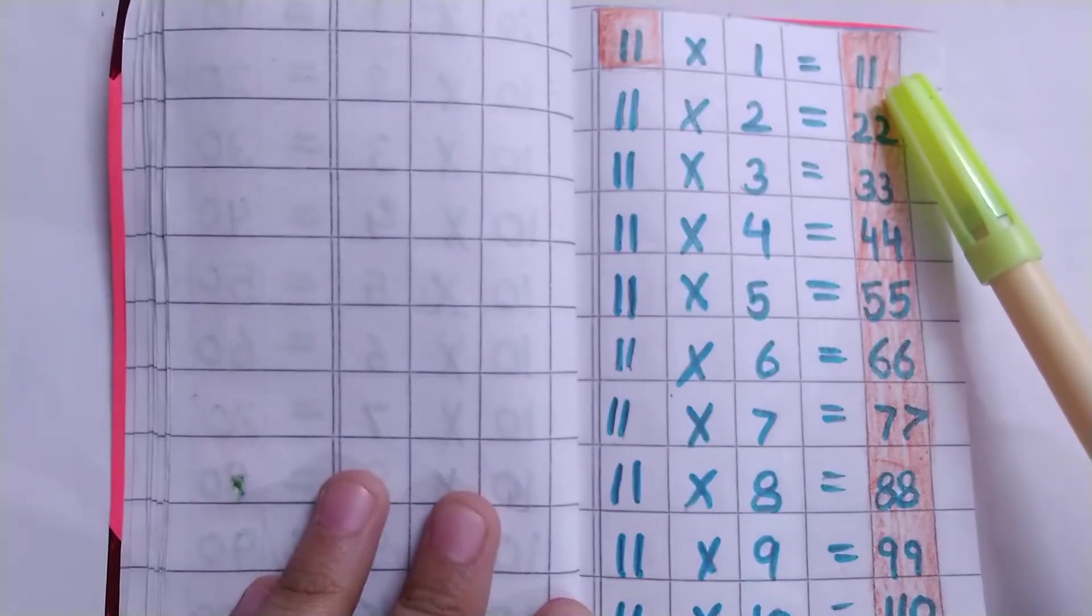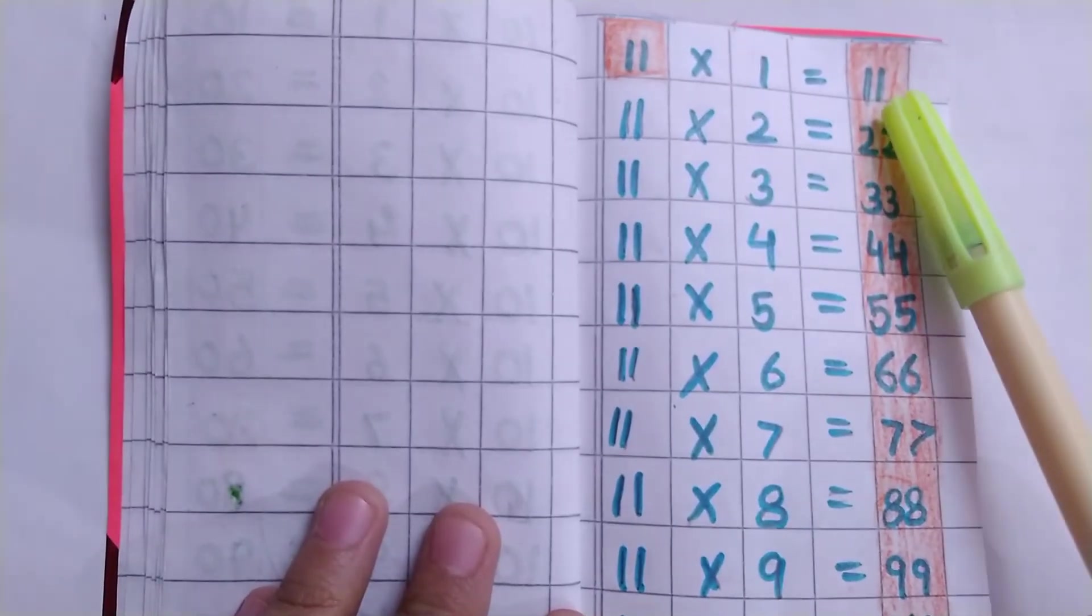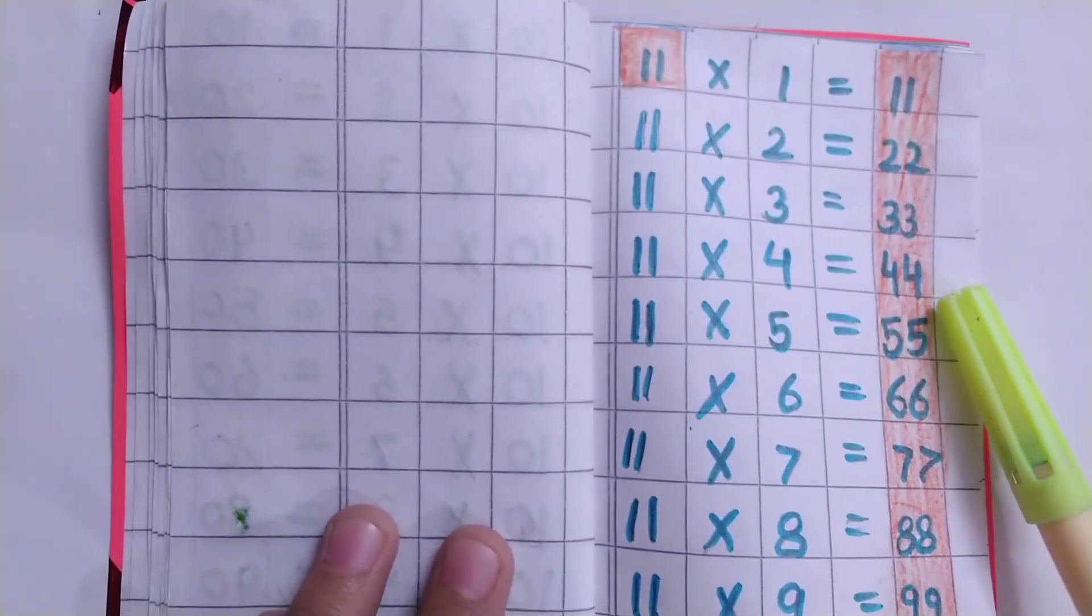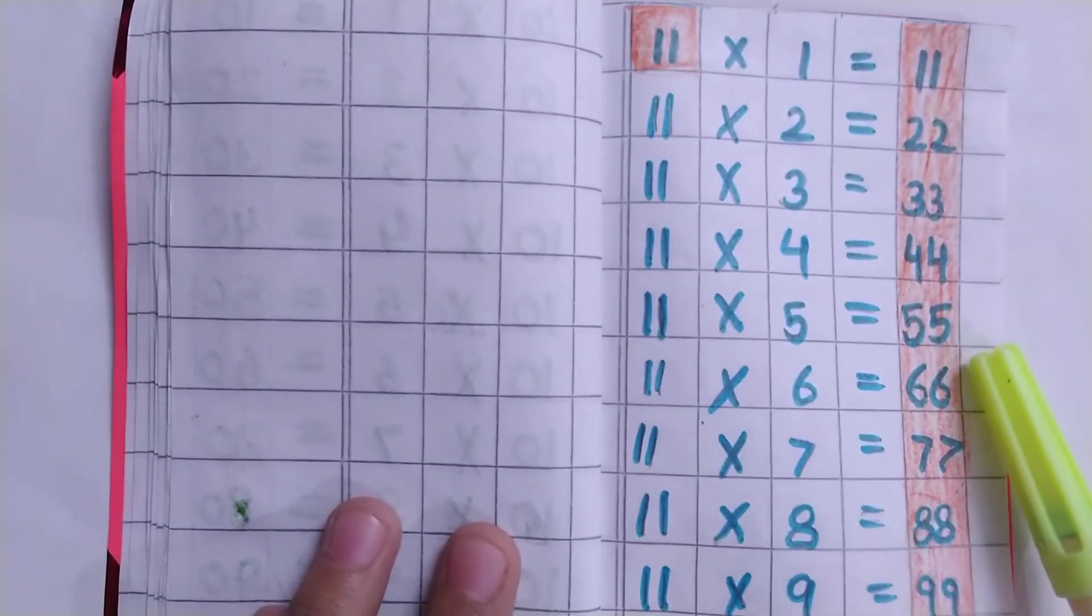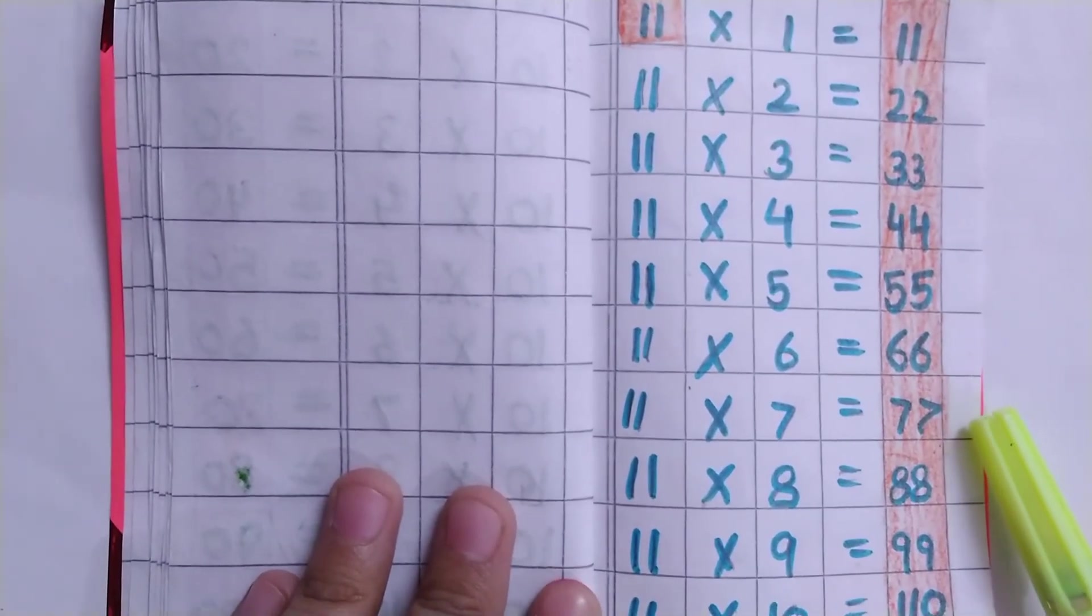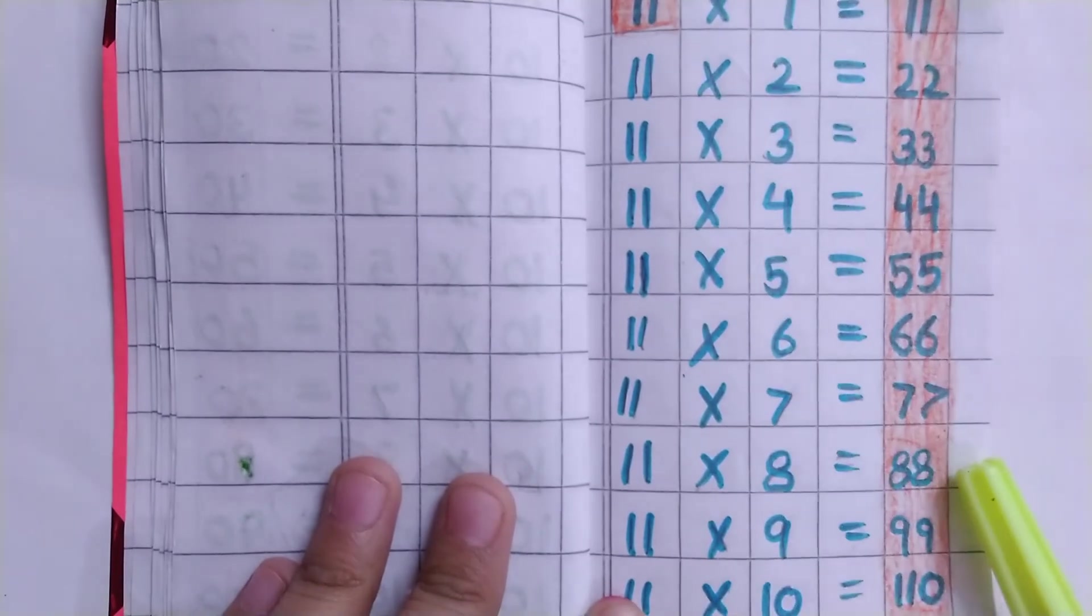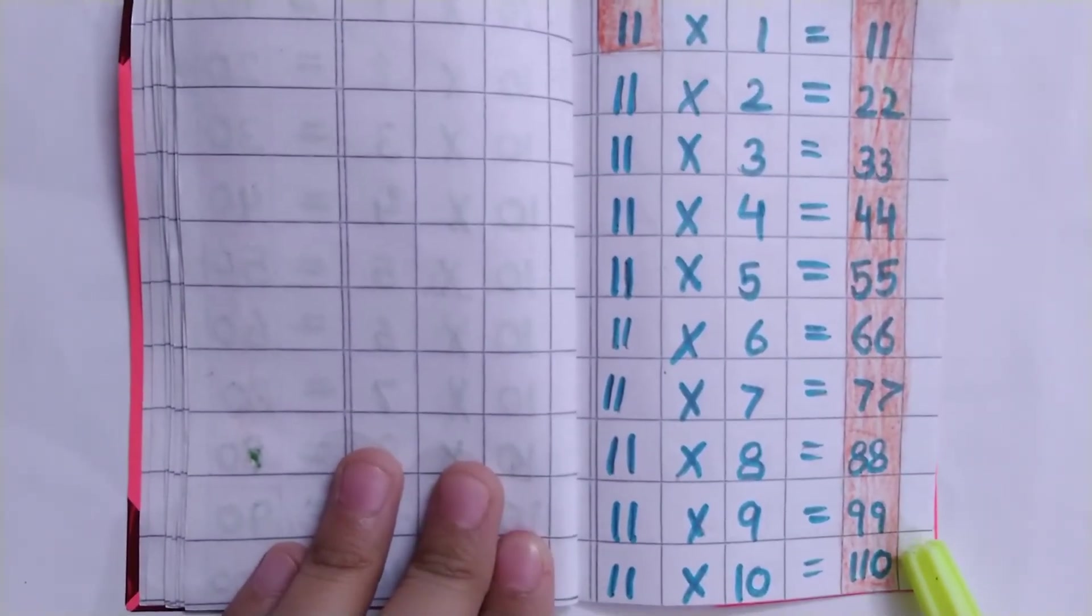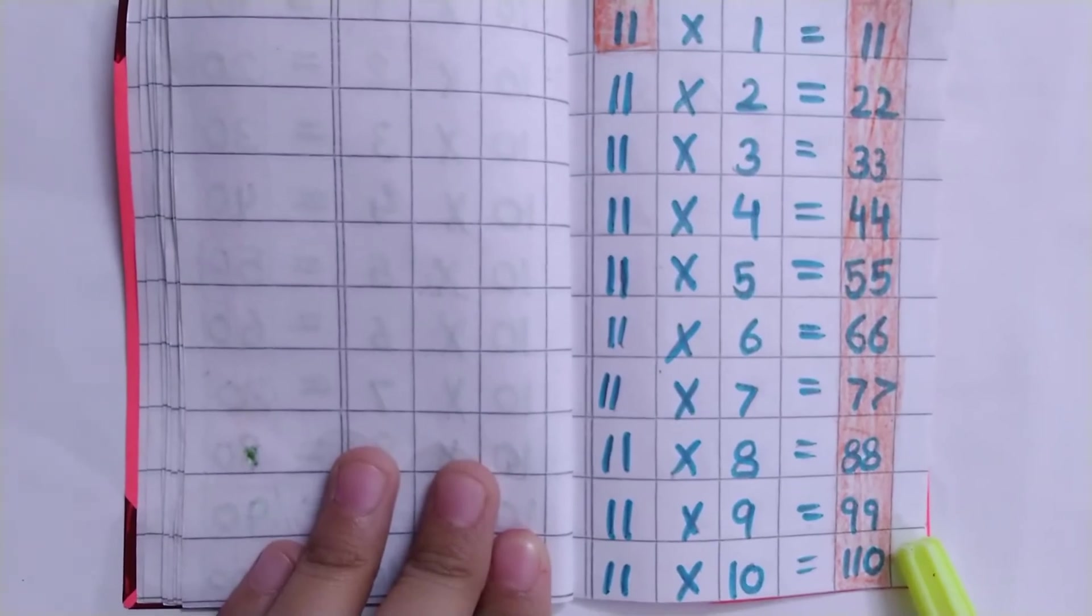Table of 11: 11×1=11, 11×2=22, 11×3=33, 11×4=44, 11×5=55, 11×6=66, 11×7=77, 11×8=88, 11×9=99, 11×10=110.